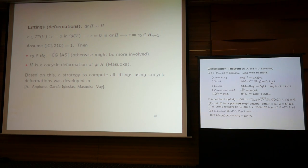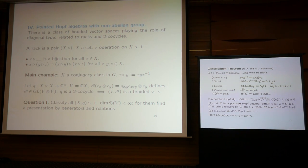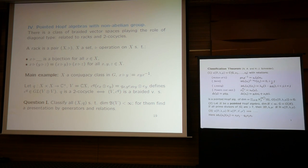I would like to say two things about the non-abelian case. If you believe what I said until now, you will say: to classify pointed Hopf algebras over a finite abelian group you need to understand Nichols algebras of diagonal type. To understand pointed Hopf algebras over a group which is not abelian, you will need something different. This something different is related to the notion of rack, which I don't want to explain in two minutes.